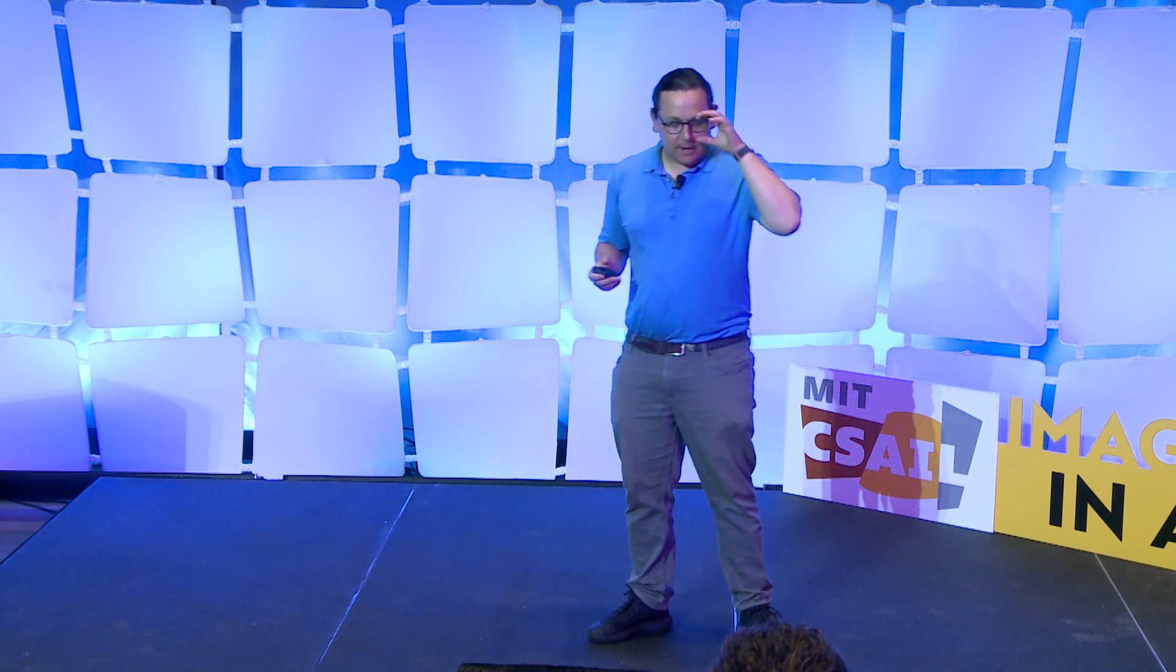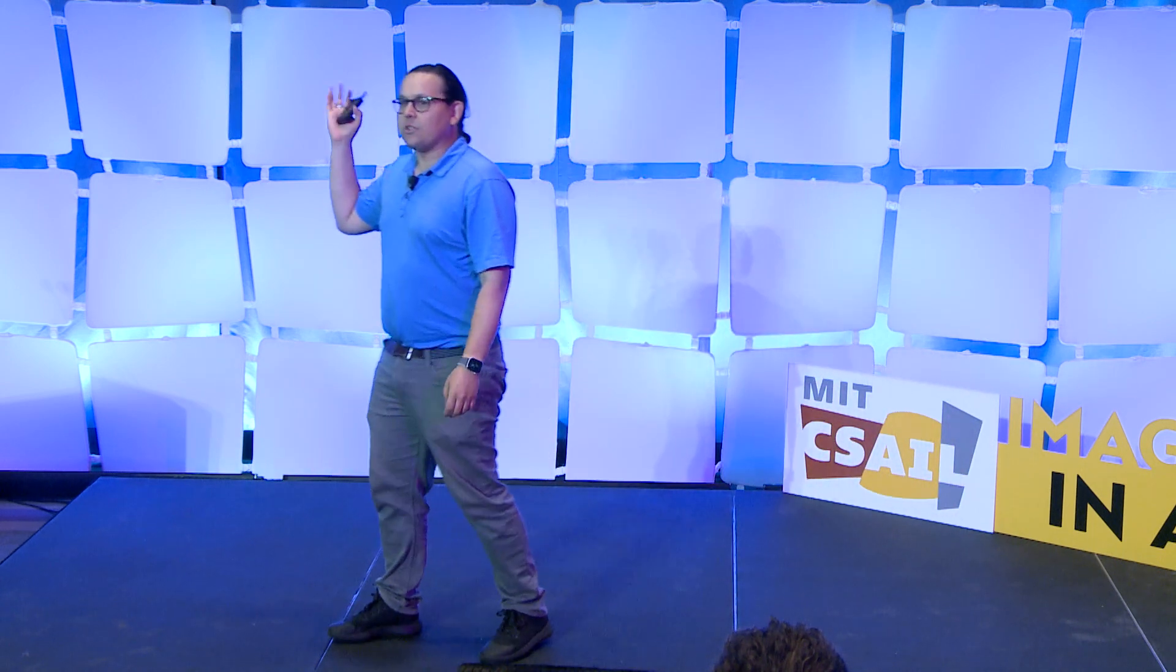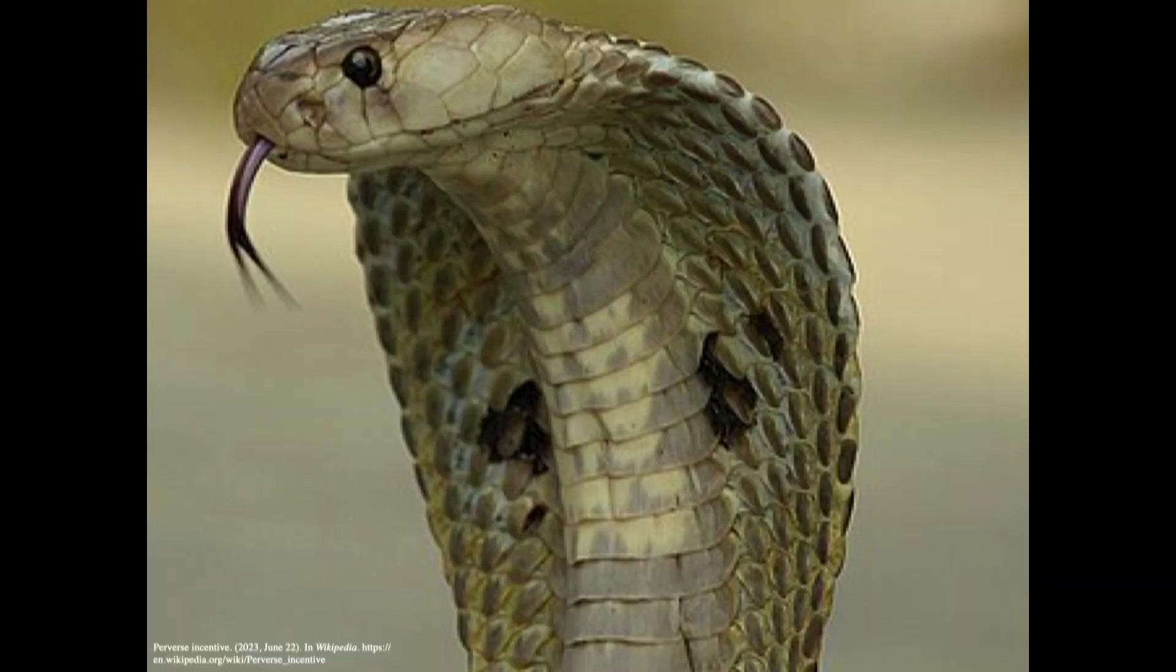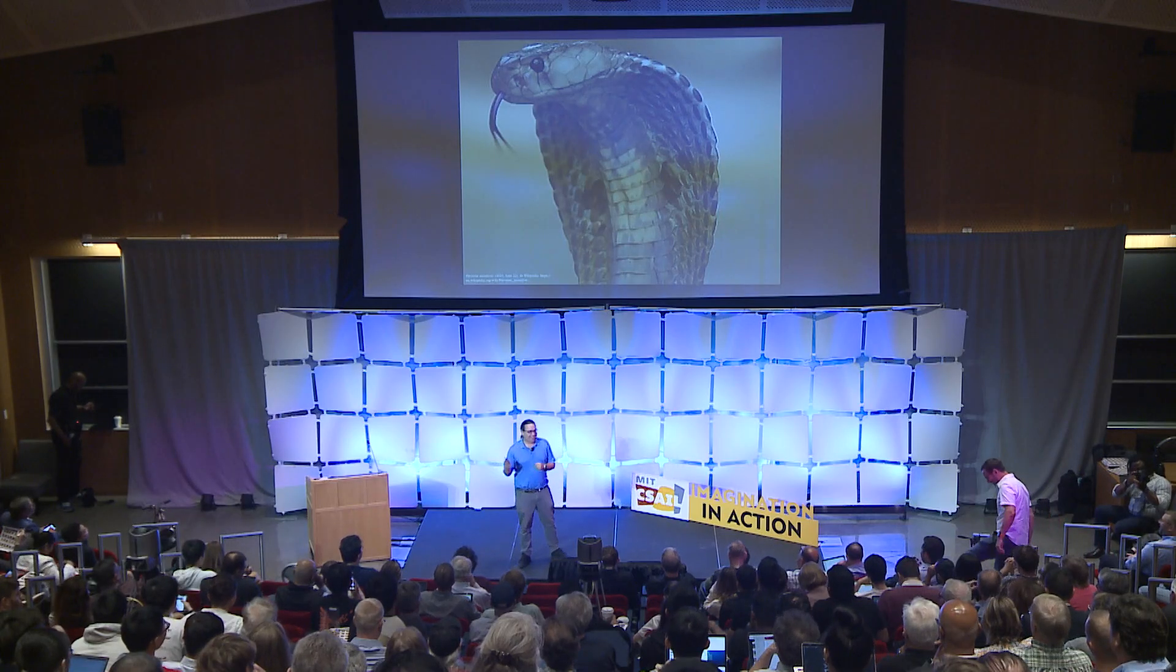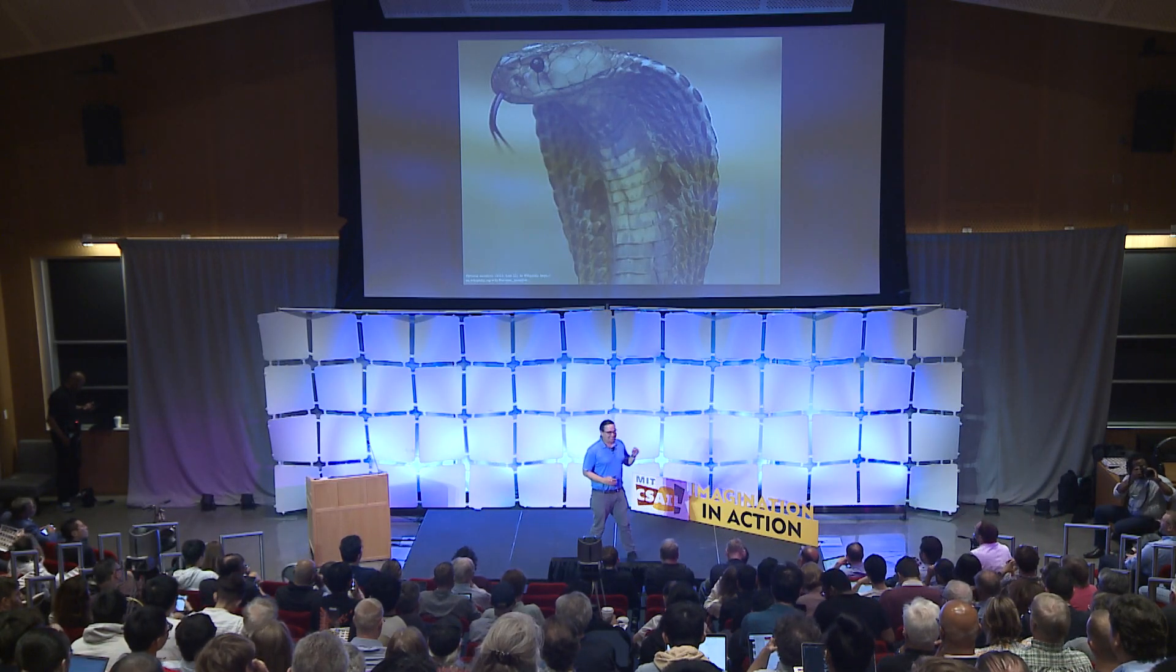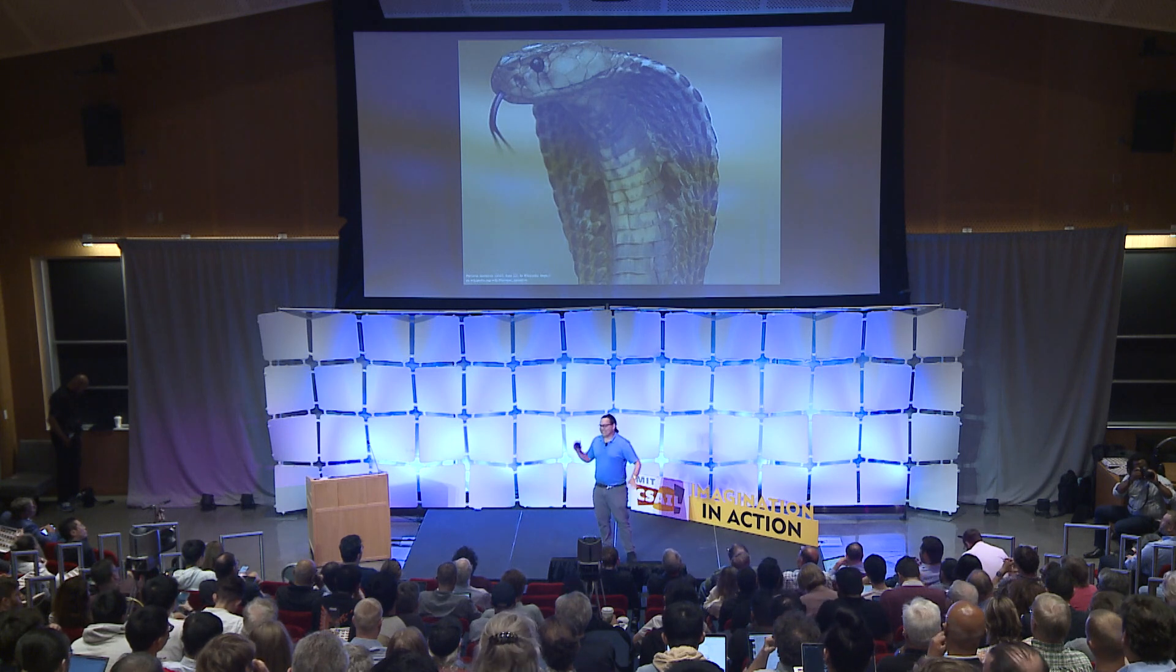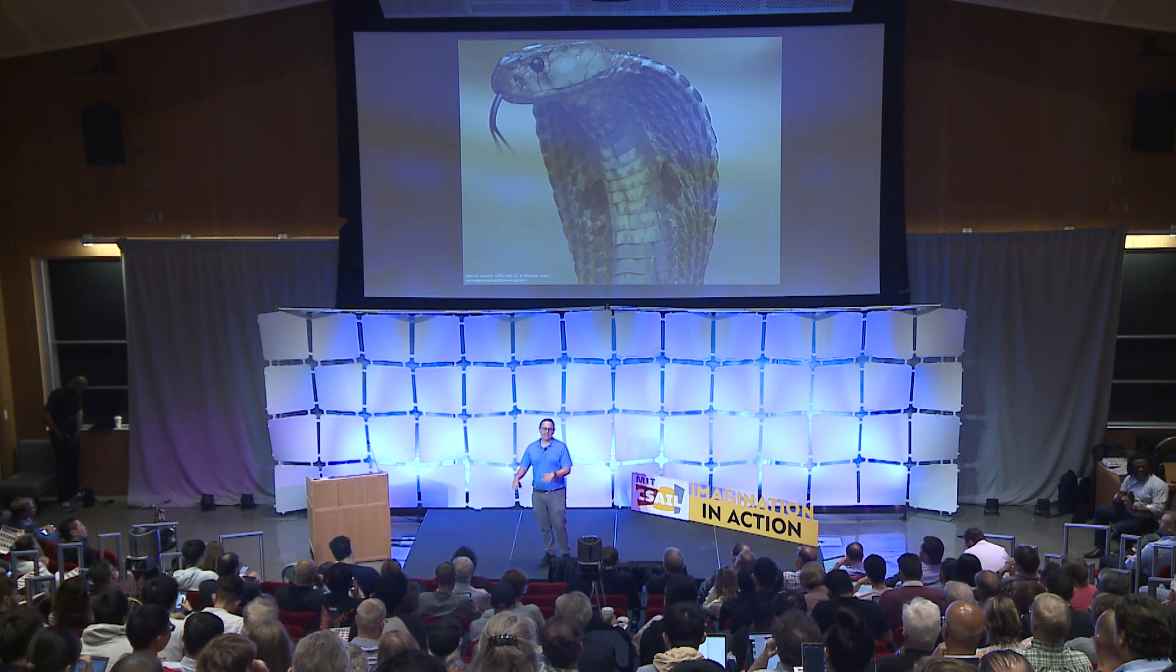So this is something that occurs all over the place. One more example from history is called the cobra effect. This was colonial Britain in India. There was a real problem they had with cobras. They wanted fewer cobras, so they created a bounty on cobra heads. Bringing a cobra head, they would give you money for it. It started off working well until some people realized they could start breeding cobras. You can see that clearly took things off the rails. The colonialists realized, okay, we should stop doing this. They shut it all down. And you know what happened? All those now worthless cobras got released. So the problem was actually much worse off than when you started.